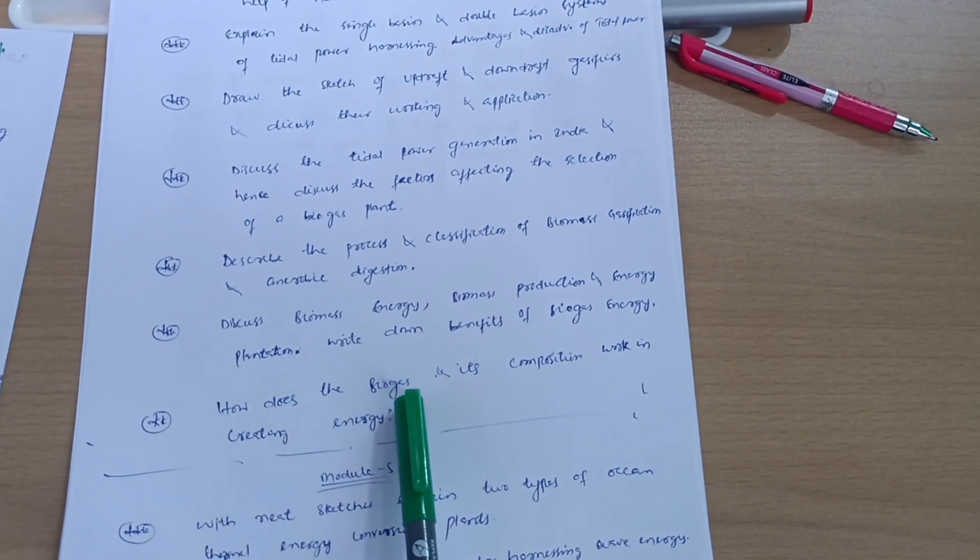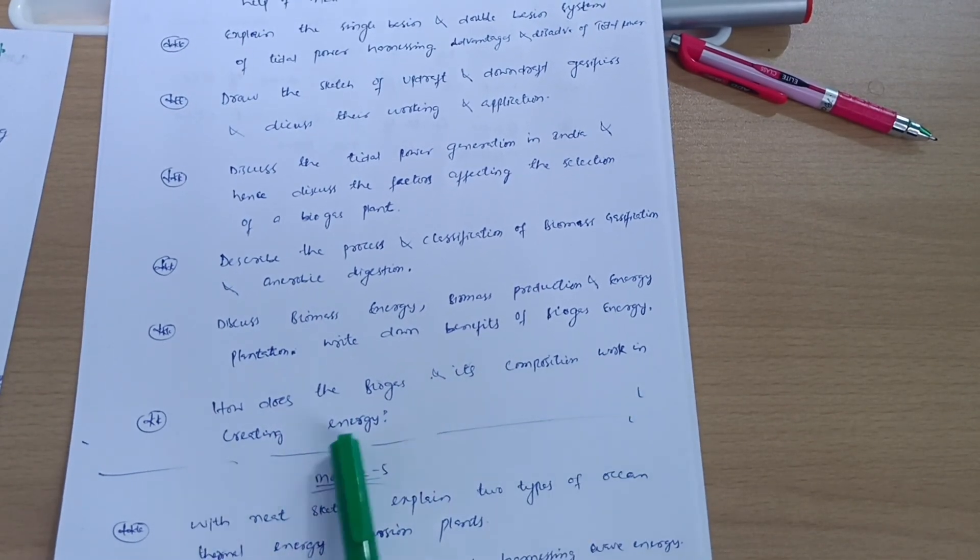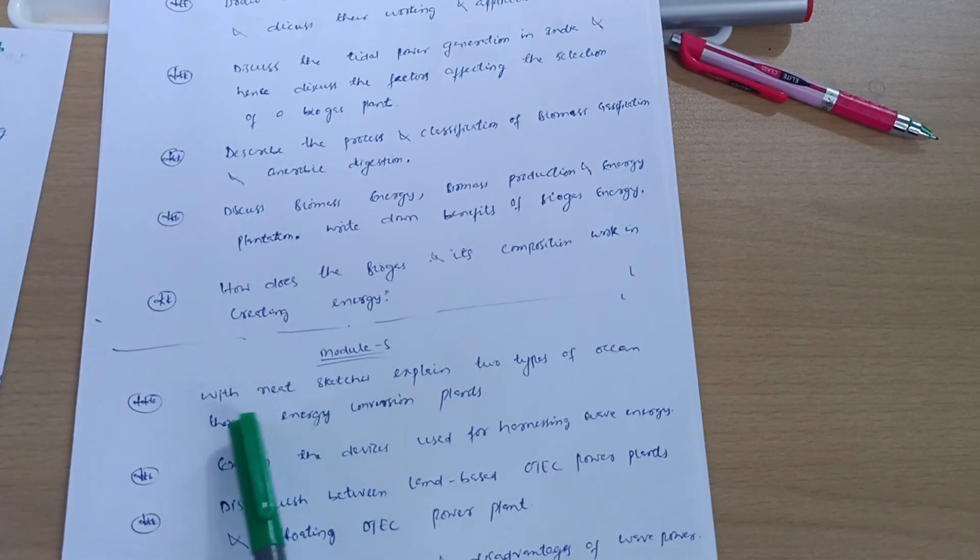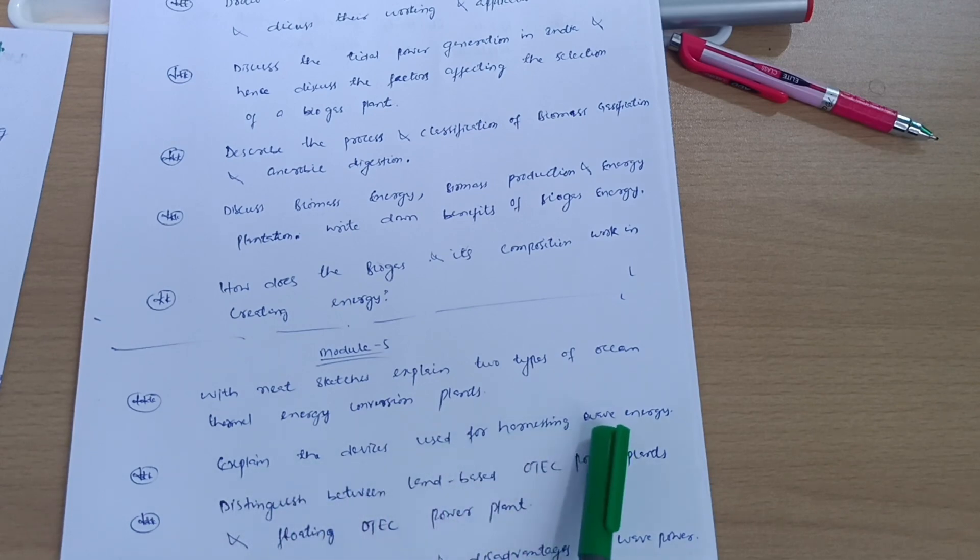Last question we have from Module 4: How does the biogas and its composition work in creating energy? Module 5, with neat sketches explain two types of ocean thermal energy conversion plants, OTEC. Explain the devices used for harnessing wave energy. Distinguish between land-based OTEC power plants and floating OTEC power plant.